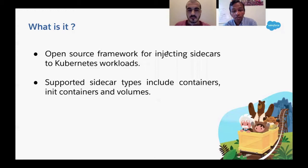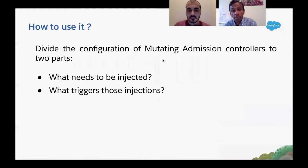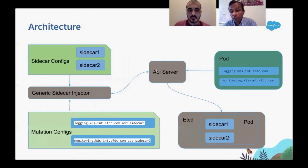At a high level, the generic sidecar injector is a mutating webhook admission controller that allows injection of additional containers, init containers, and volumes at the time of pod creation. It uses a generic configuration consisting of two parts: what needs to be injected — called sidecar configuration — and what triggers those injections — called mutation configuration. Separating these configurations allows teams to specify multiple sidecars and multiple mutations and independently choose which mutation injects which sidecars.